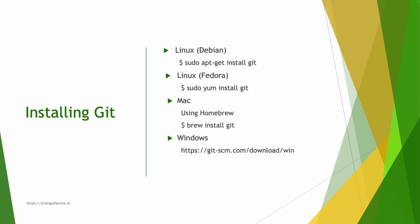Let's learn how to install Git on our machine. If you're using Linux or Debian, use `sudo apt-get install git`. If you're using Fedora, use `sudo yum install git`. If you're using Mac, use Homebrew: `brew install git`. If you're using a Windows machine, you can follow a link to download Git.